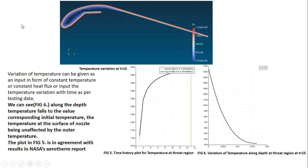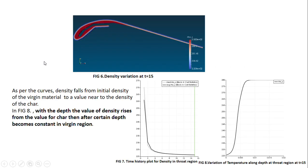This plot shows the variation of density. Figure 7 is the plot showing variation of density with time. Initially the density was same as that of virgin material, and over time at the surface of nozzle as pyrolysis goes on, the value of density reduces to the value of char density. This 220 is the value of density of char.